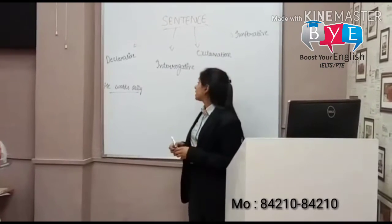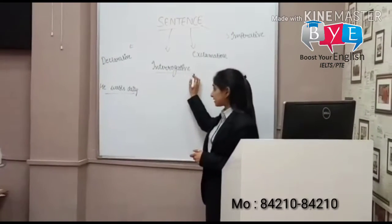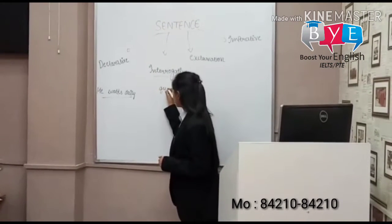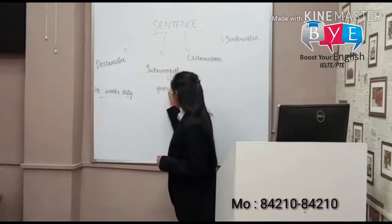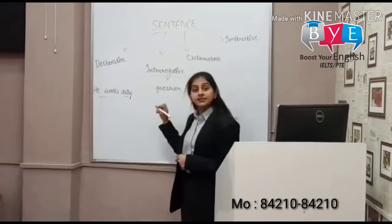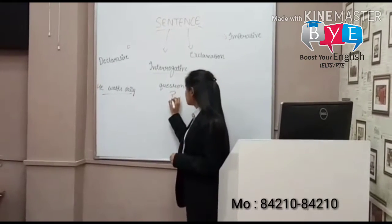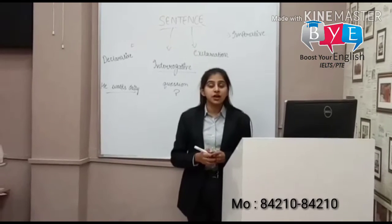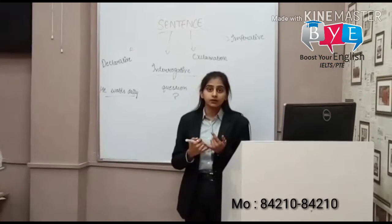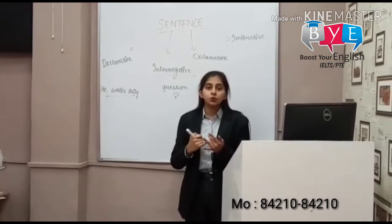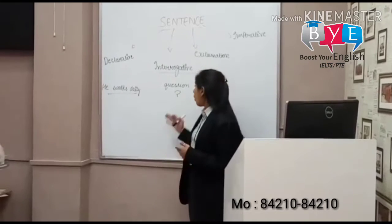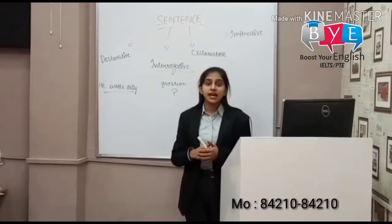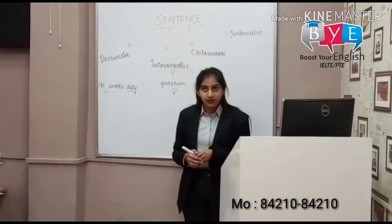Then it comes to the interrogative sentence. These types of sentences are used to ask questions. At the end of these sentences, we have to put a question mark. Usually, these kinds of sentences start with the WH family — what, where, when, whose, whom, how, and why. These sentences can also be answered with yes, no, or not given.